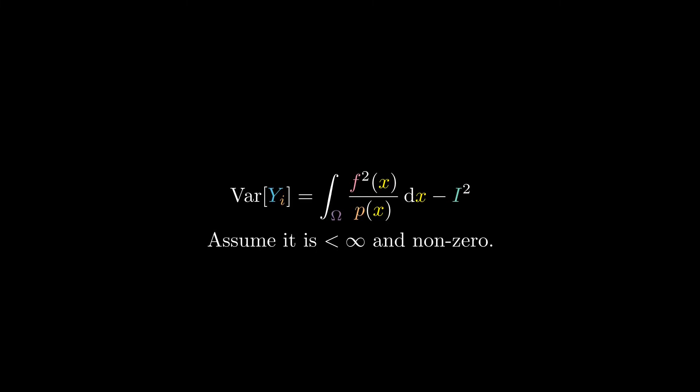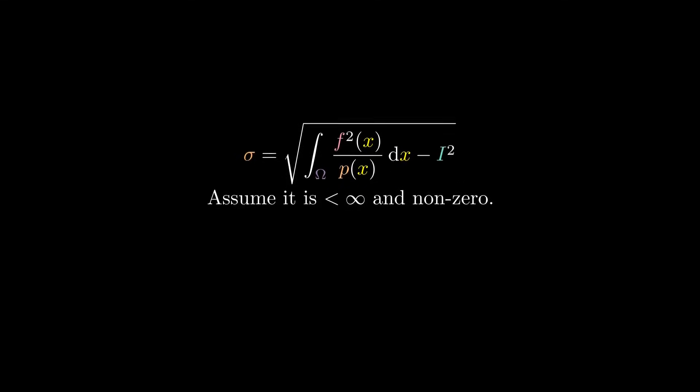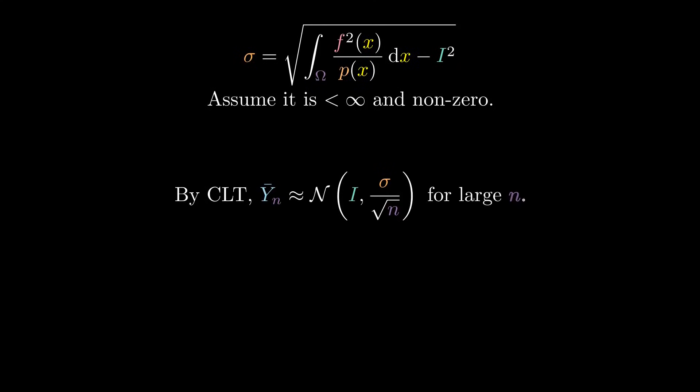With this in mind, we now take square roots to get the standard deviation. Applying the CLT, we can approximate the distribution of our estimator by a normal distribution with mean i and standard deviation sigma over the square root of n for large n.